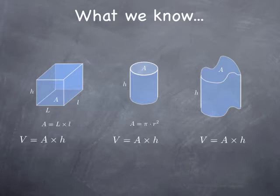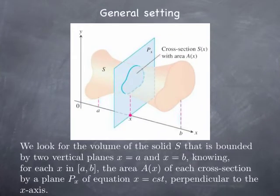We're going to use this observation in trying to calculate more complicated volumes. The general kind of things that we're looking at when we're trying to use cross-section technique is that we're trying to find the volume of a solid that lies above an axis, let's say the x-axis, and is bounded by two vertical planes, x equals a and x equals b.